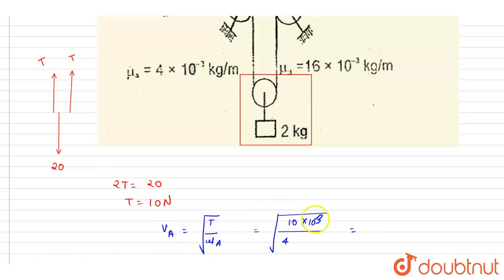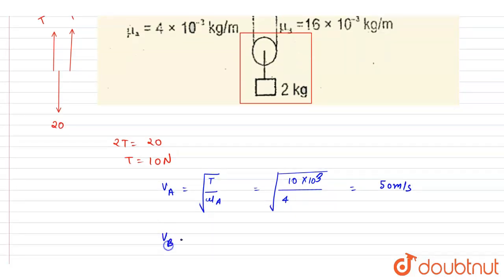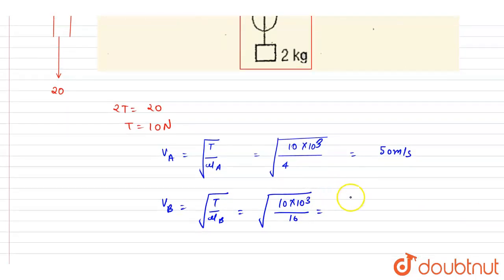So it equals 10^4, which is 10^2 by 2, giving 50 meter per second. For velocity in string B, it's the square root of T by μ_B, which is the square root of 10 divided by 16 × 10^-3. This gives 100 by 4, which is 25 meter per second.